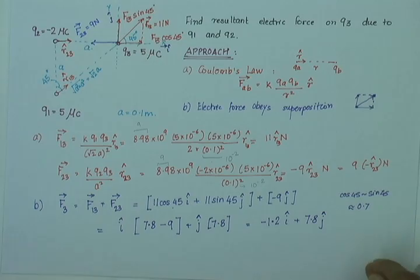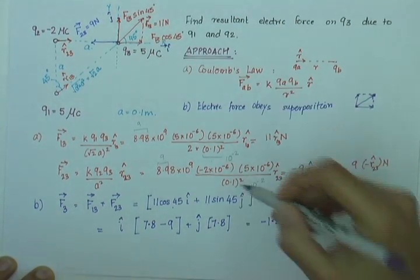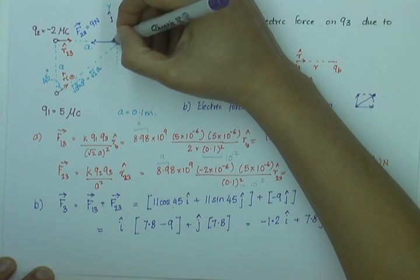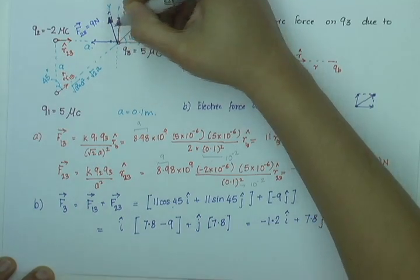If I try to draw my resultant on this diagram, this is j-cap, this is 7.8 j-cap and minus 1.2 is somewhere here. So, this will be my resultant F3.